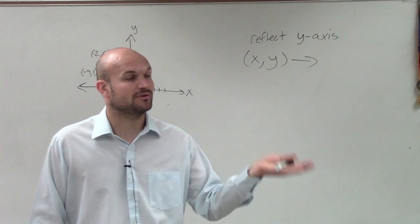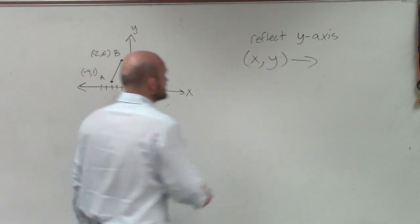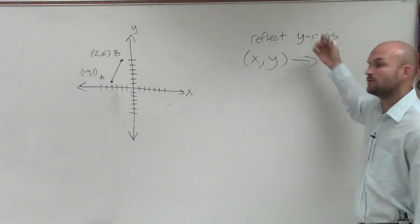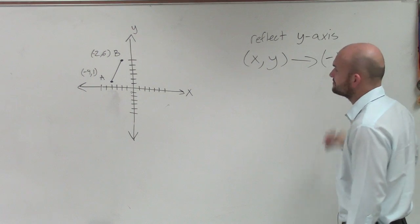Well, the y happened when we reflected over the x-axis. So the x, and that's exactly correct. If I have a coordinate point and I'm reflecting over the y-axis, now my x-coordinate is going to be the opposite sign.